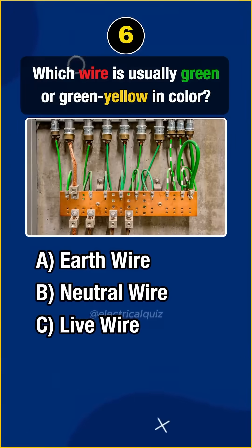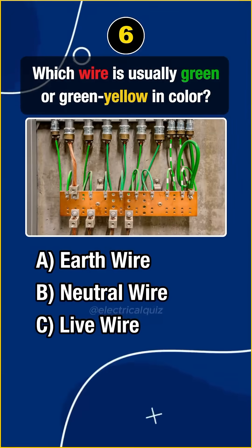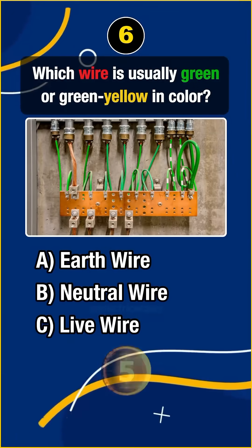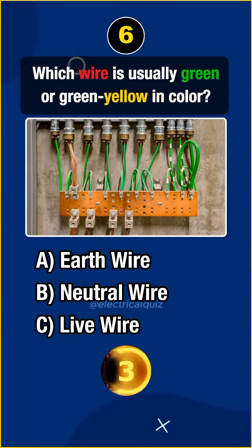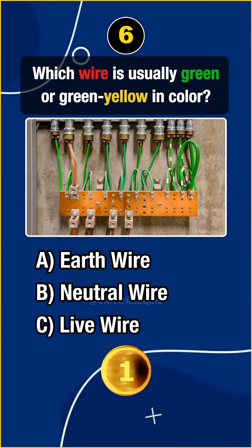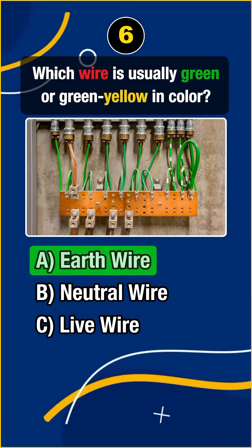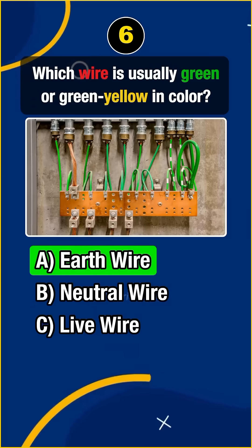Question 6. Which wire is usually green or green-yellow in color? Answer A: Earth wire.